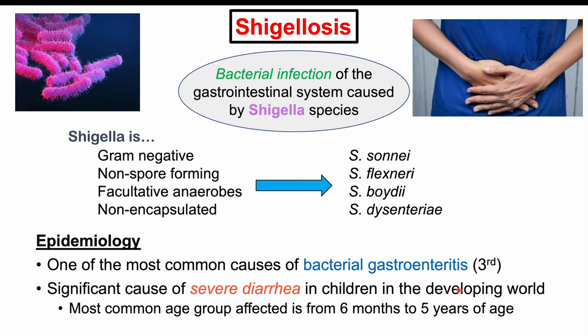The most common age group affected by shigellosis worldwide is from six months to five years of age. So it is a very important cause of severe diarrhea in young children.